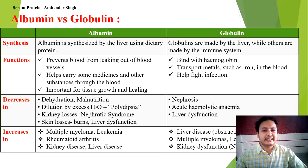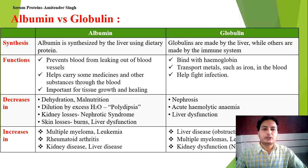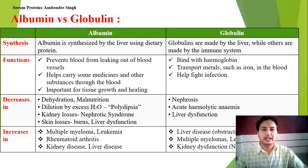Albumin also decreases due to skin losses such as in burn cases, and liver dysfunction — if the liver is not synthesizing properly, the value will be lower. Similarly, globulin decreases in nephrotic syndrome, hemolytic anemia, and liver dysfunction. Globulin increases in multiple myeloma — where plasma cells become cancerous and harm bones, blood, and the immune system — as well as in leukemia, rheumatoid arthritis, kidney disease, and liver disease.